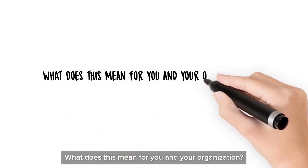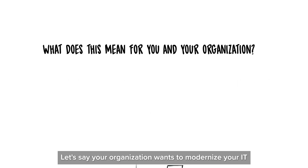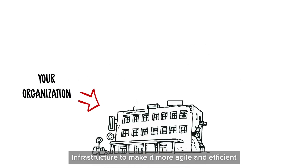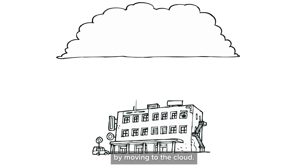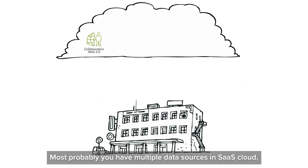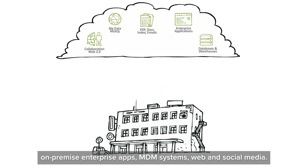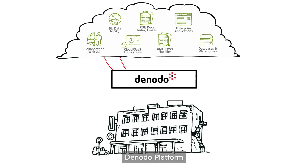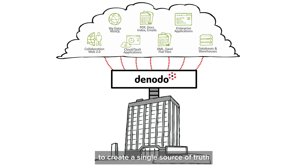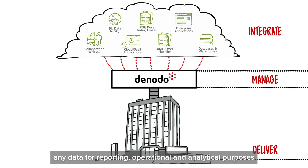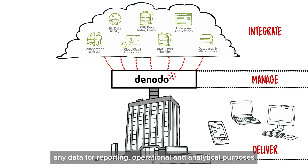What does this mean for you and your organization? Let's say your organization wants to modernize your IT infrastructure to make it more agile and efficient by moving to the cloud. Most probably you have multiple data sources in SaaS cloud, big data clusters, on-premise enterprise apps, MDM systems, web and social media. Denodo Platform will work in the background to virtually combine all your data sources to create a single source of truth and enable your users to access any data for reporting, operational and analytical purposes without worrying about the underlying complexity.